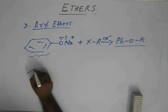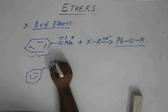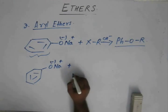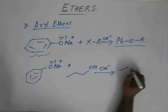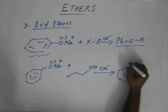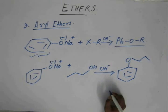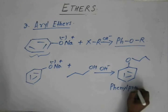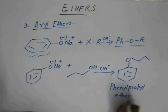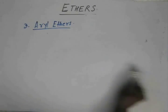Sodium phenoxide reacts with, let us say, propyl alcohol in the presence of a base, and we get propyl phenyl ether or phenyl propyl ether. I hope you have understood this.